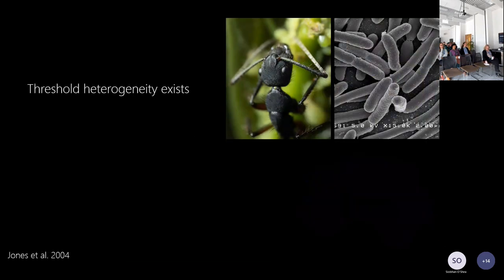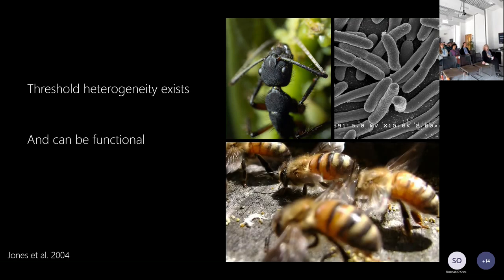One interesting thing about thresholds is that they show a lot of variation and heterogeneity. This happens with most biological systems. We have bacteria with different thresholds for responding to antimicrobial toxicity, and Camponotus carpenter ants with thresholds that differ between individuals in response to temperature. But these can be functional. In the case of honeybees, we have a fanning threshold: when the temperature of the colony reaches a certain point, bees begin fanning, but different groups start at different temperatures, so the response is graded as more and more bees fan — stopping overcompensation.